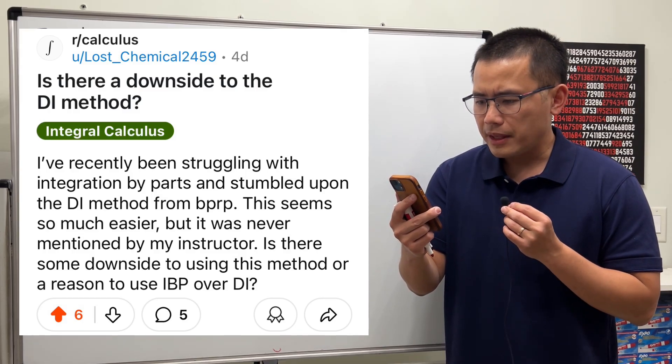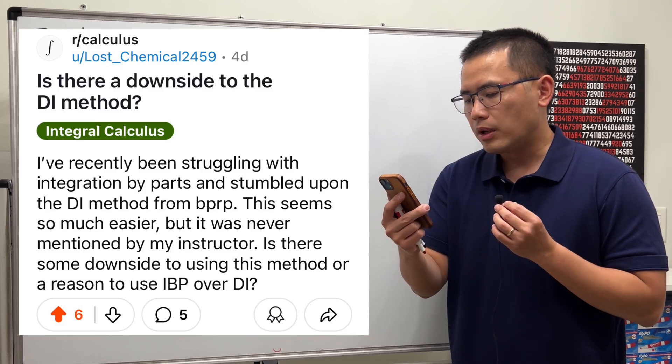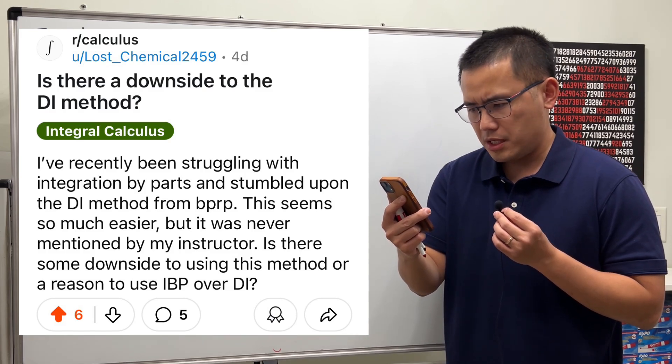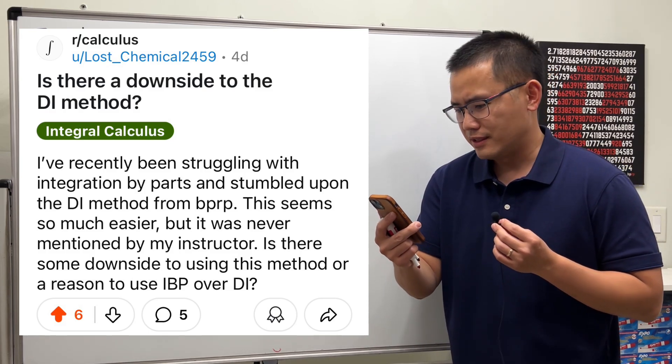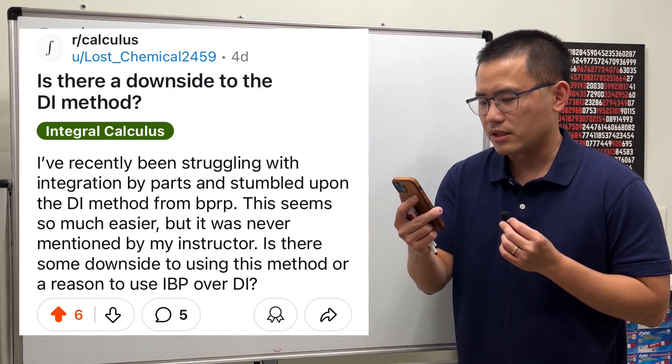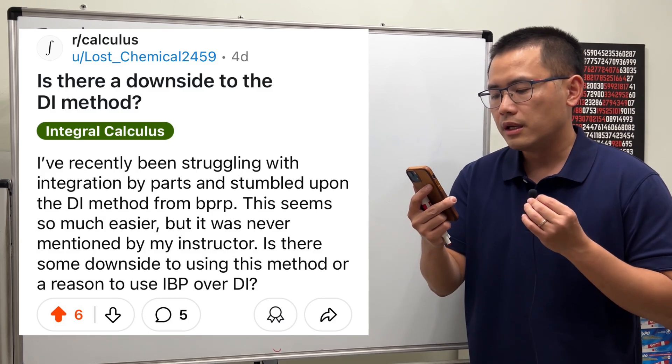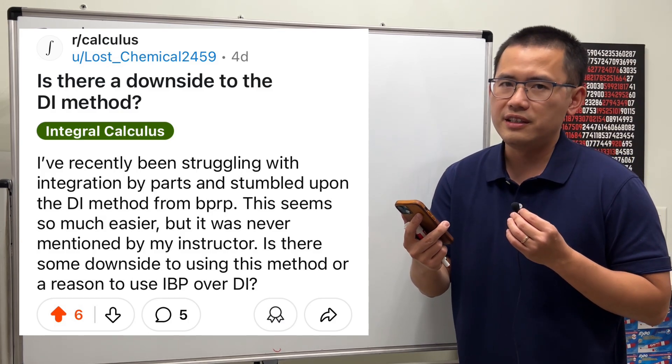Is there a downside to the DI method? I have recently been struggling with integration by parts and stumbled upon the DI method from BPRP. I wonder who that guy is. This seems so much easier, but it was never mentioned by my instructor. Is there some downside to using this method or reason to use IBP over DI?